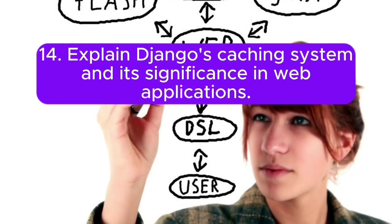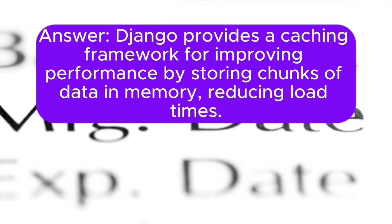Question 14: Explain Django's caching system and its significance in web applications. Answer: Django provides a caching framework for improving performance by storing chunks of data in memory, reducing load times.